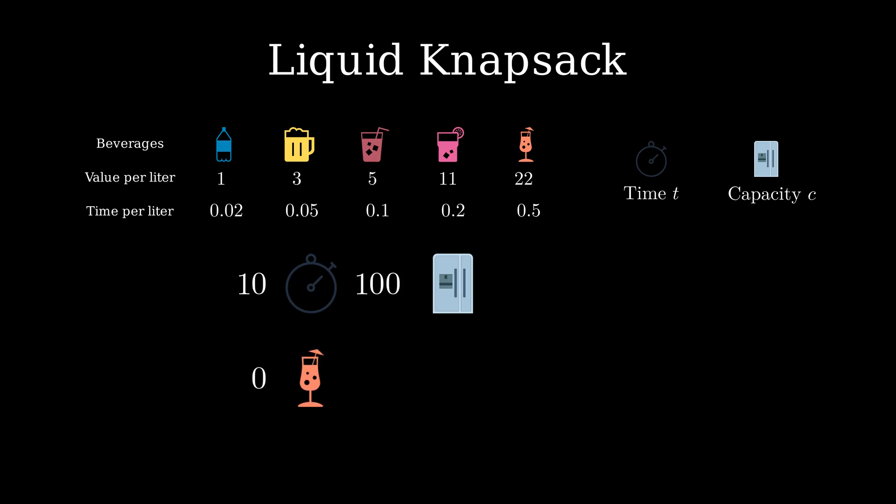We could pick the beverage with the highest value which is the fancy cocktail. However, we can only create 20 liters of fancy cocktails in the time given and have plenty of room left in the fridge. The total value would be 440.